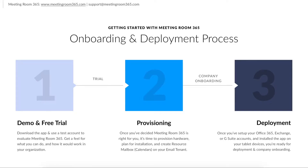Once you've set up a display, you can test it on your computer or in your browser, seeing all the customization options offered by Meeting Room 365. When you're ready, you can set up the application on your tablet device by downloading the app from the App Store, the Google Play Store, or the Amazon App Store. If you have custom hardware, reach out for more information on how to set up your device.